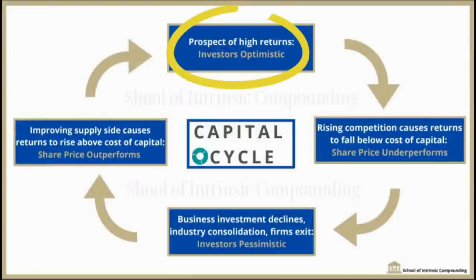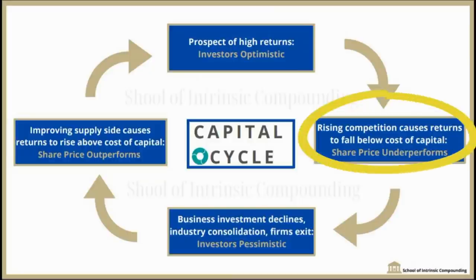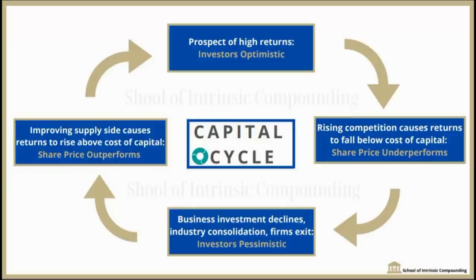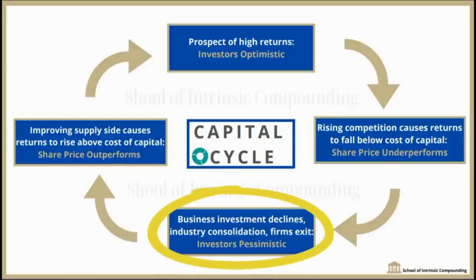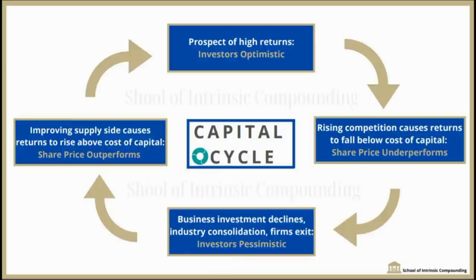The simple answer lies in assessing the supply side of these companies. This is how a typical capital cycle works according to the book. In the first stage, investors get bullish and more and more capital starts flowing into the business. In the second stage, because there is a lot of capital in the sector, players increase and competition increases on the supply side. The profit pool is divided among many people, and when irrational competition comes, the profit pool of the industry ends. This leads to the third stage, where inefficient players exit the market and investors start losing money, because return on capital never exceeds the cost of capital.